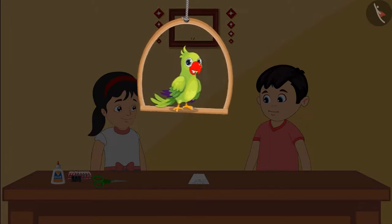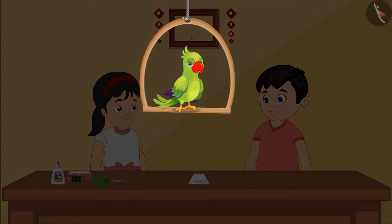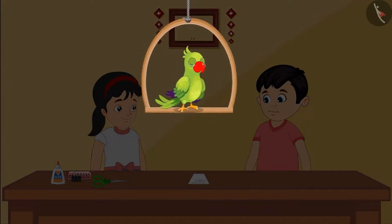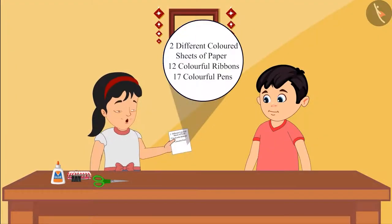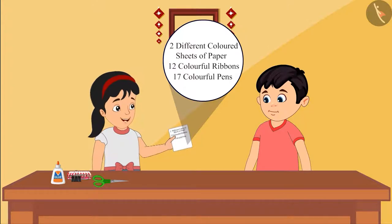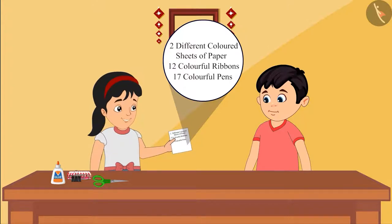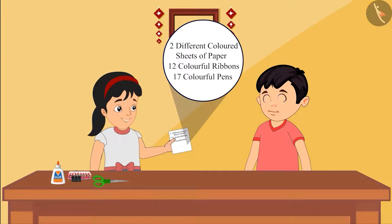Today is Pinky and Chotu's parents' wedding anniversary, and that's why Pinky and Chotu decide to make a card for their parents. Pinky needs some objects to make the card and she makes a list of these objects. Chotu, we need all of these objects to make a card — can you go quickly and get all these objects from the nearby shop please? Meanwhile I will start making the card.